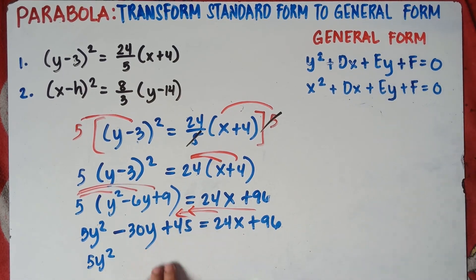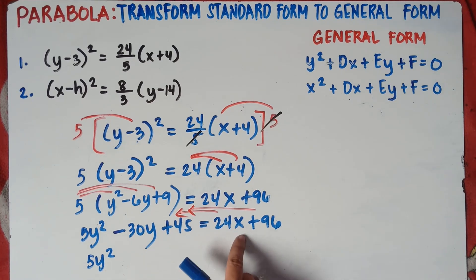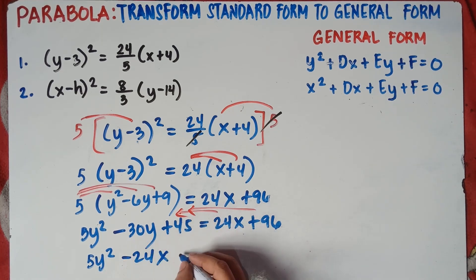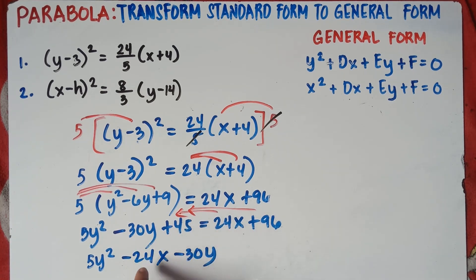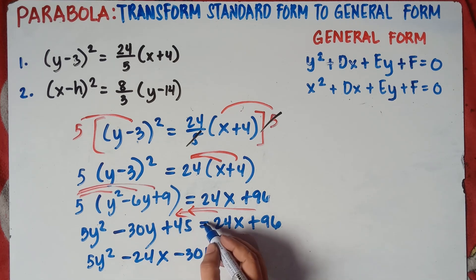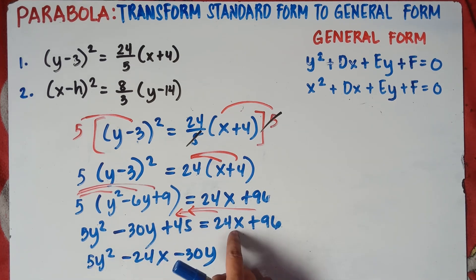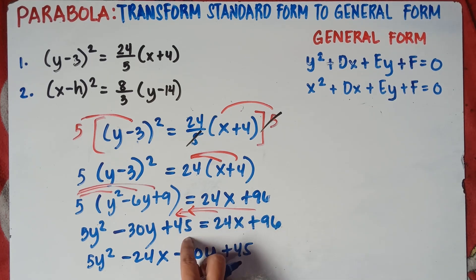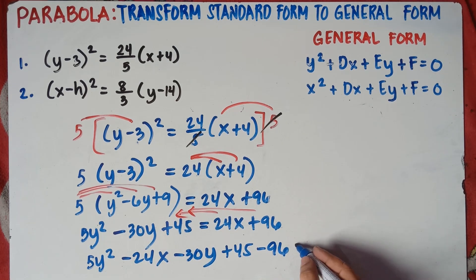So transposing: 24x from the right becomes negative 24x on the left. The negative 30y stays as is — we didn't transpose it, so the sign doesn't change. Copy positive 45. Then transpose 96 — it was positive, so it becomes negative 96. Equals 0.